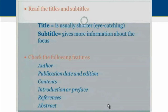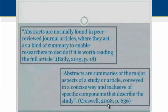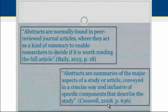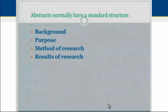The last feature is the abstract, which I consider one of the most important. Abstracts are normally found in peer-reviewed journal articles, where they act as a kind of summary to enable researchers to decide if it is worth reading the full article. Creswell mentions that abstracts are summaries of the major aspects of a study or article conveyed in a concise way, inclusive of specific components. Normally when reading abstracts we will find background information, the purpose of the study, the method of research, and the results.